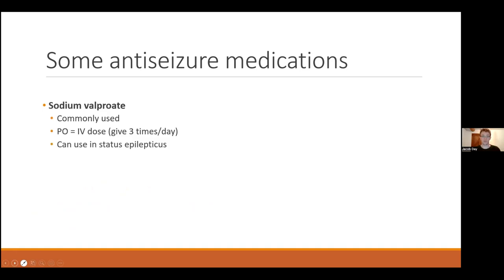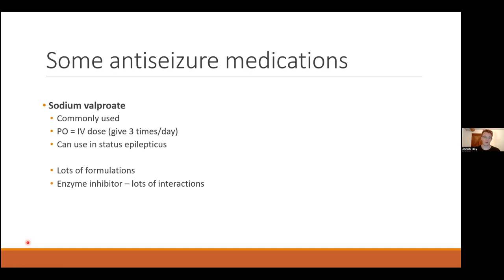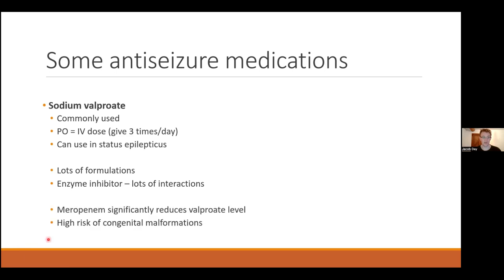Sodium valproate has been around for a long time and is a very good antiepileptic used in most seizure types. The oral and IV dose are equivalent, but the IV dose should be given eight-hourly rather than 12-hourly due to its half-life. It can be used in status epilepticus. It's a bit more complicated than levetiracetam — there are multiple formulations: Epilim, Epilim Chrono, Epilim Enteric Coated, all with slightly different absorption. It's an enzyme inhibitor with lots of interactions — a fairly dirty drug in terms of interacting with other medications. Meropenem significantly reduces valproate levels; if the patient needs meropenem, you may need to increase the valproate or add another antiepileptic temporarily. There's also the well-known high risk of congenital malformations, which is why it's not used in women of childbearing age.